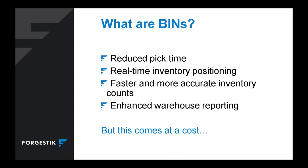Another recommendation is putting items with the highest sales velocity closer to your staging area. By Pareto analysis, roughly 20% of your items are probably 80% of your sales, so take that 20% and put it closer to the door. This helps you analyze enhanced warehouse reporting — you can see what's selling quickest and move things around to optimize the warehouse. You also get real-time inventory positioning.